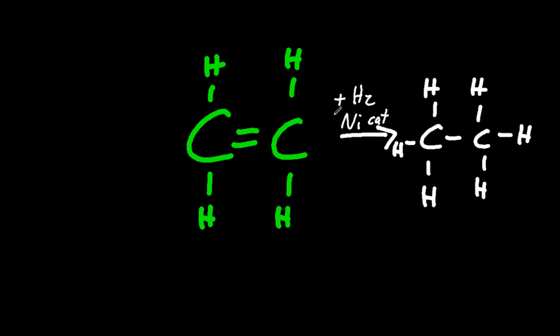It needs a nickel catalyst, you need to know that as well. So to turn an alkene into an alkane, what you've got to do is add hydrogen with a nickel catalyst. And heat it up, actually.